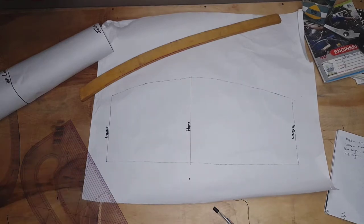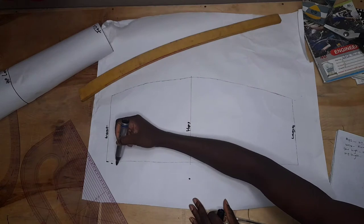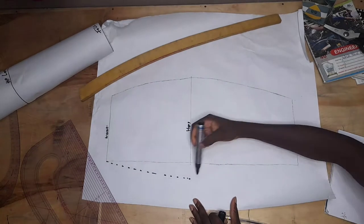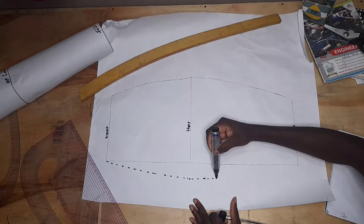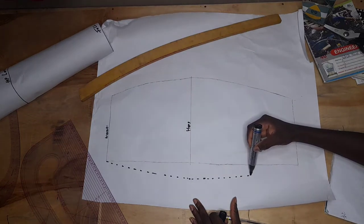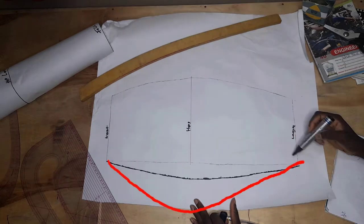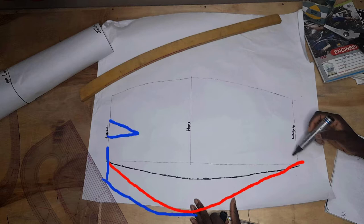Then you go ahead to connect from the waist to the hip and to the hem line. So that's the only difference with the normal way I used to cut skirt pattern.